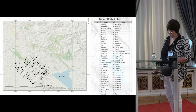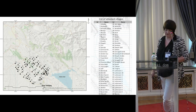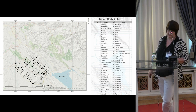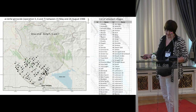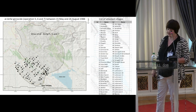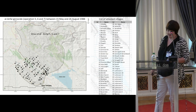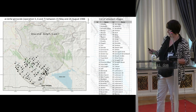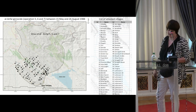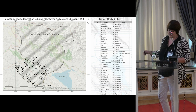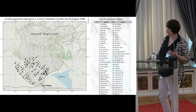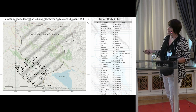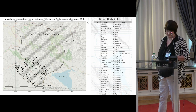Approximately 150 villages that were totally or partially destroyed as a result of the Anfal genocide - the so-called operations 5th, 6th, and 7th between 15th May and 26th August 1988 - are located in this particular mountainous landscape. 68 of the original count of 150 villages are located straight in our area of interest and they are the base data source for our research.